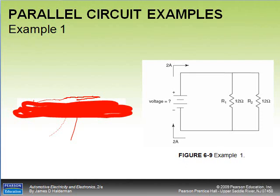Let's work a few of these problems. Looking at example one, the unknown here is voltage. Going back to Ohm's law, voltage equals amperage times resistance. So if I want to find voltage, all I have to do is take amperage and multiply it by resistance.